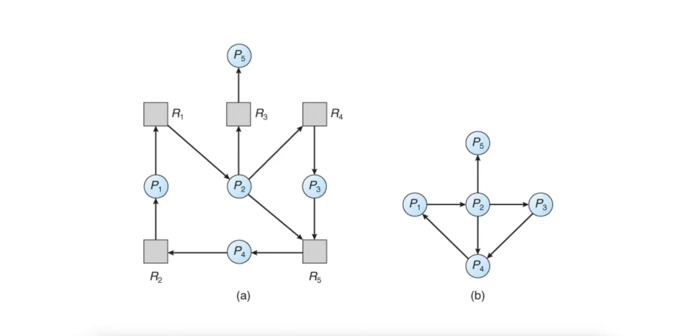The fourth condition is circular wait. A circular chain of processes exists where each process is waiting for a resource held by the next process in the chain. The prevention strategy is to impose a strict order on resource allocation, requiring that processes request resources in a predefined order in order to avoid cycles.